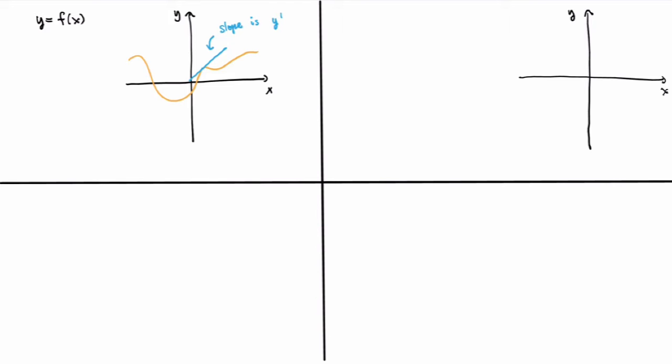But sometimes you might be interested in studying curves in the xy-plane that are not the graph of a function. For example, consider this circle. This is clearly not the graph of a function because it doesn't pass the vertical line test — for a given x, there are two y values, so it's multi-valued. But you may still ask: what is the slope of the tangent line at any point on the circle?